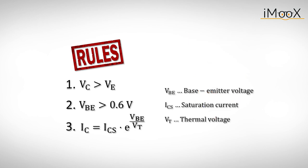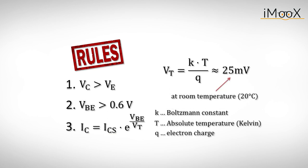For now, we are happy with the simplified version of this equation, which will suffice for all our purposes. It accounts for all major dependencies of IC, like the base emitter voltage VBE, the saturation current ICS, and the temperature, which is expressed by VT. VT is defined as the Boltzmann's constant K times the absolute temperature T in Kelvin, divided by the electron charge Q. At room temperature, VT has a value of about 25 millivolts.